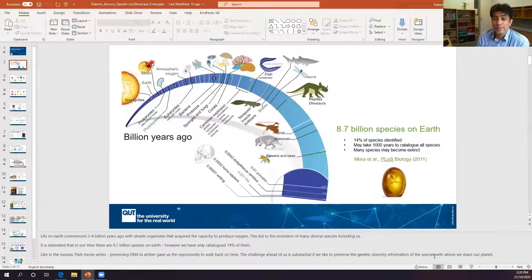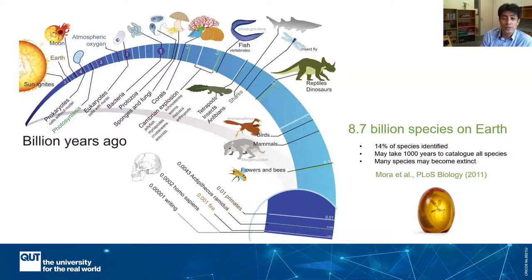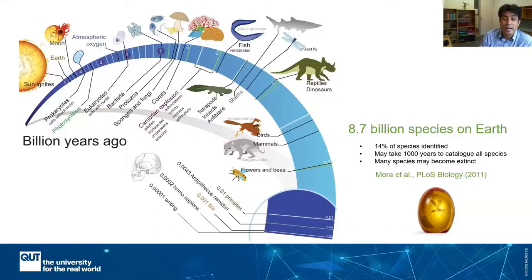Three to four billion years ago, we had very simple organisms that evolved their capacity to produce oxygen, generating conditions that allowed many other species to evolve. A study released in 2011 suggested that we currently share our planet with 8.7 billion species, and it estimated it may take us a thousand years to catalog all of them. We only know a small fraction of those species, mainly those living on land, not marine species. Many of these species may go extinct in that time. Like Jurassic Park, we need an 'amber' to document, collect, and preserve the genetic data of the species we share the planet with.